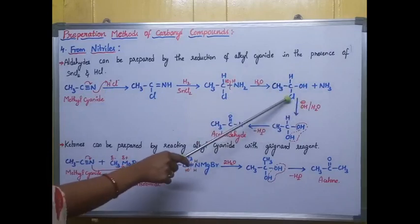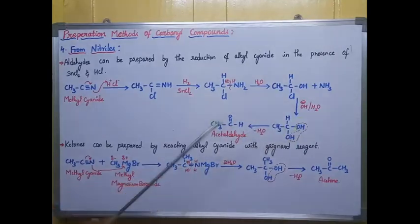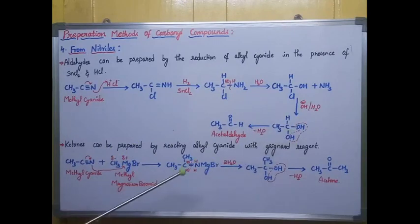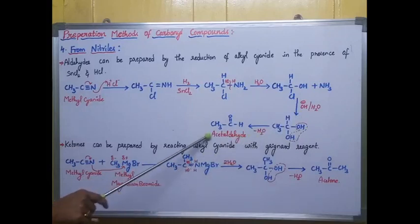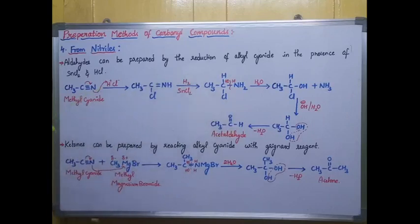Next, I add OH− to substitute the Cl with OH−, giving two OH groups. Finally, I perform hydrolysis — removing a water molecule from these two OH groups — and I get acetaldehyde (CH3CHO) as a product. This is the method for preparing aldehydes from nitriles.